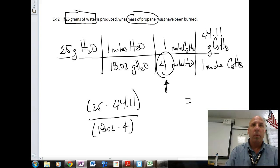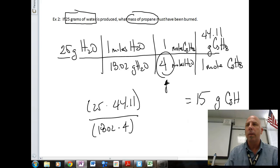And so I'm getting an answer of, we'll call it 15. Really it's 15.3, but I'm going to round to two sig figs. 15.3 grams of propane is needed to produce 25 grams of water.